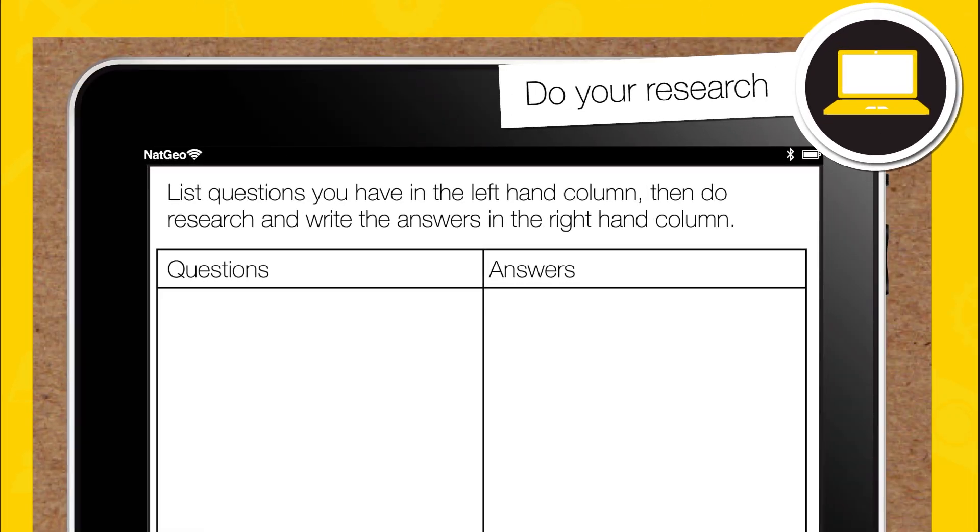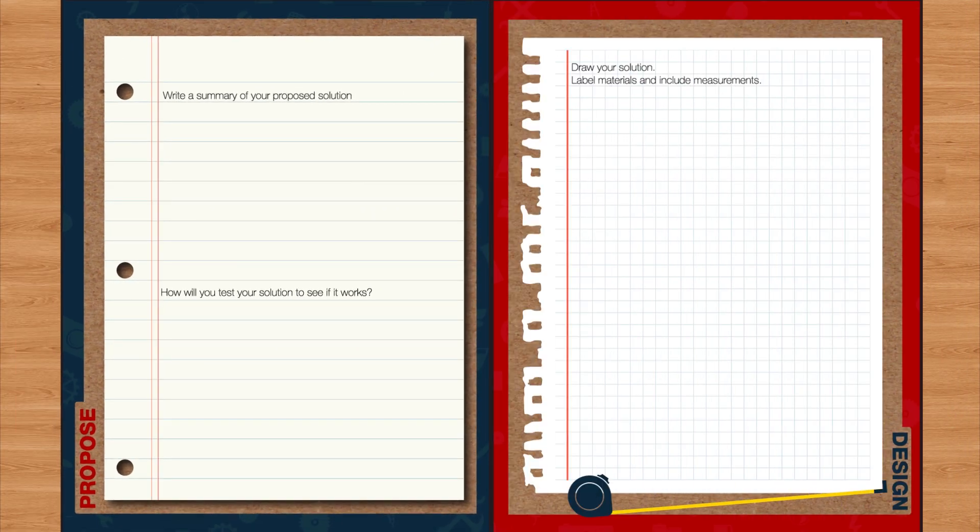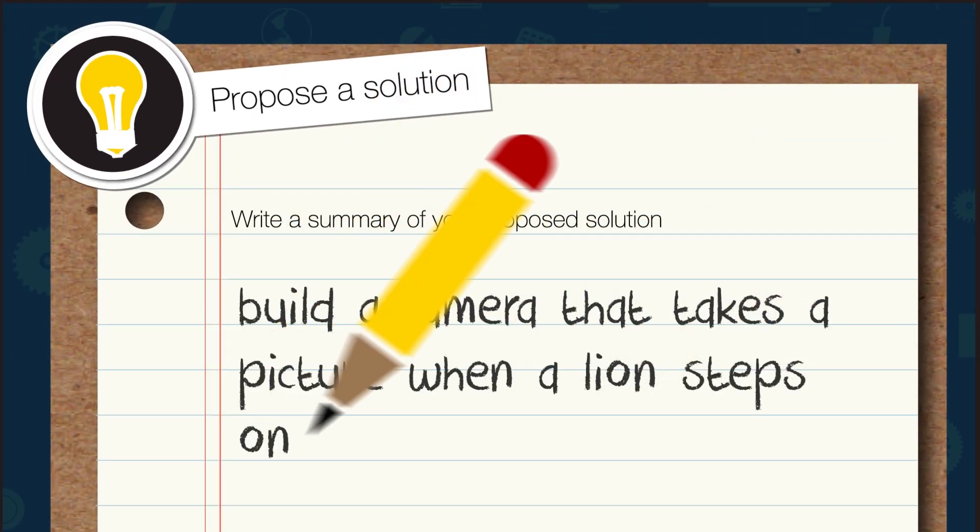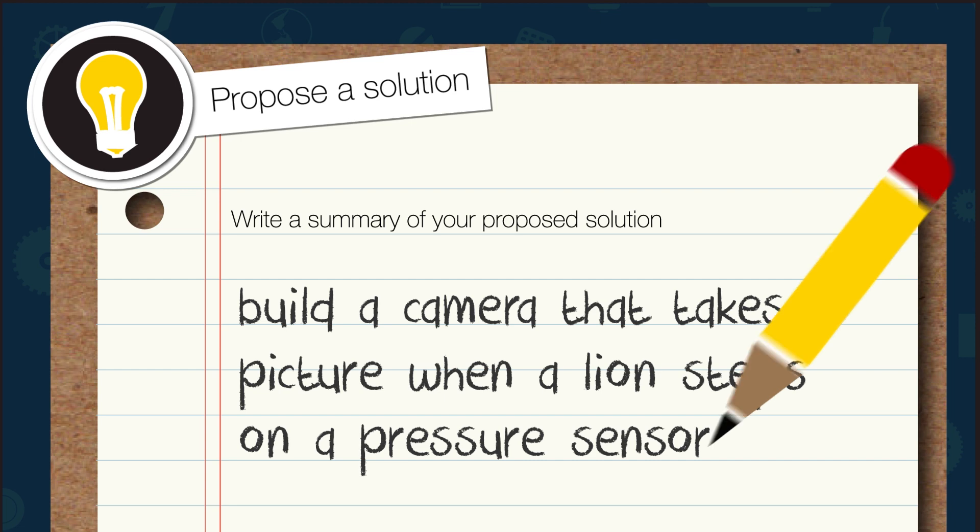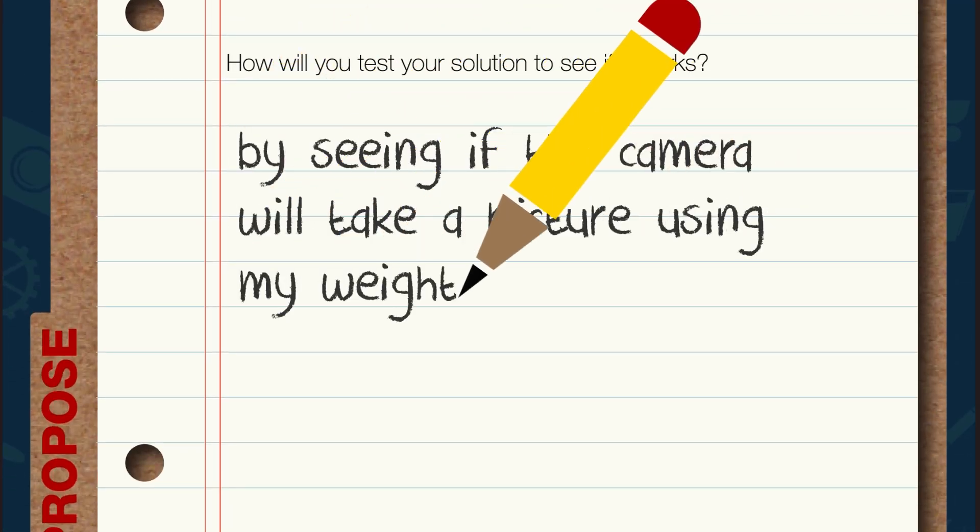Step two, do your research. Make a list of questions you have about your problem and then answer them. Step three, propose a solution. Note we said a solution, not the solution. There are often several ways to solve a problem. And be sure to plan how you will test your design.